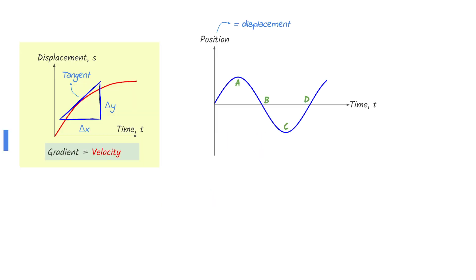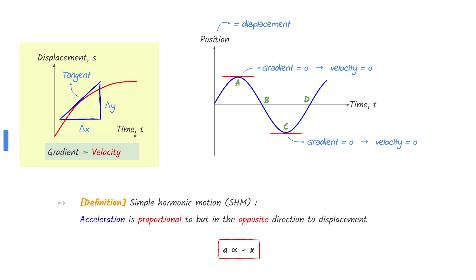The gradient of a displacement-time graph is the velocity. We can think of the position shown on the y-axis as displacement. Positions A and C have zero gradients, which means that at those points the velocity is zero. Although the question does not specifically state that this is simple harmonic motion, we can assume it is. The acceleration and displacement of a simple harmonic motion are always opposite to each other. This means that the positive position at A will have a negative acceleration.